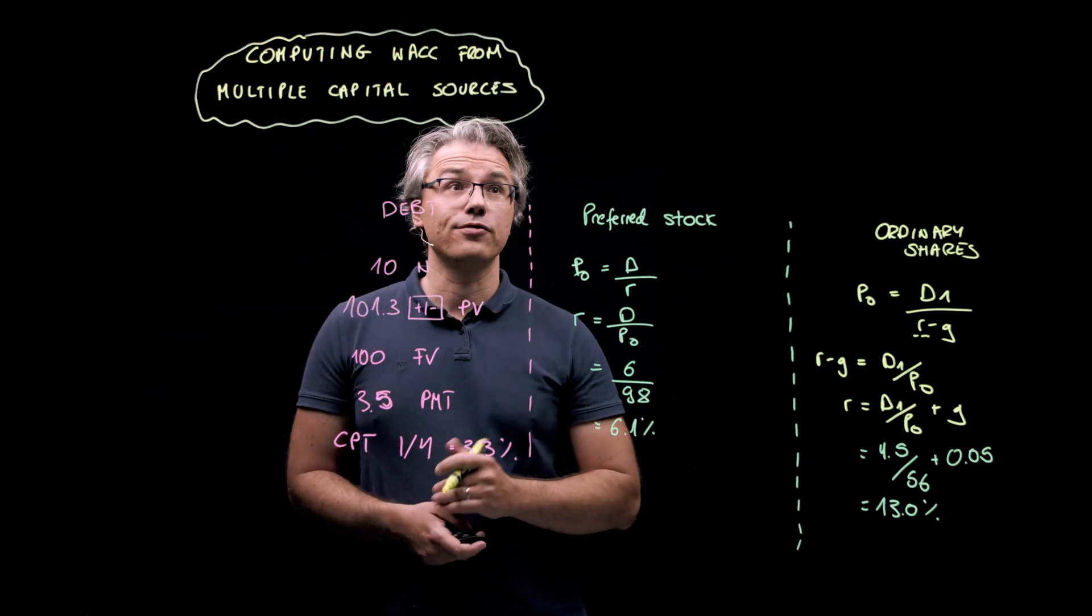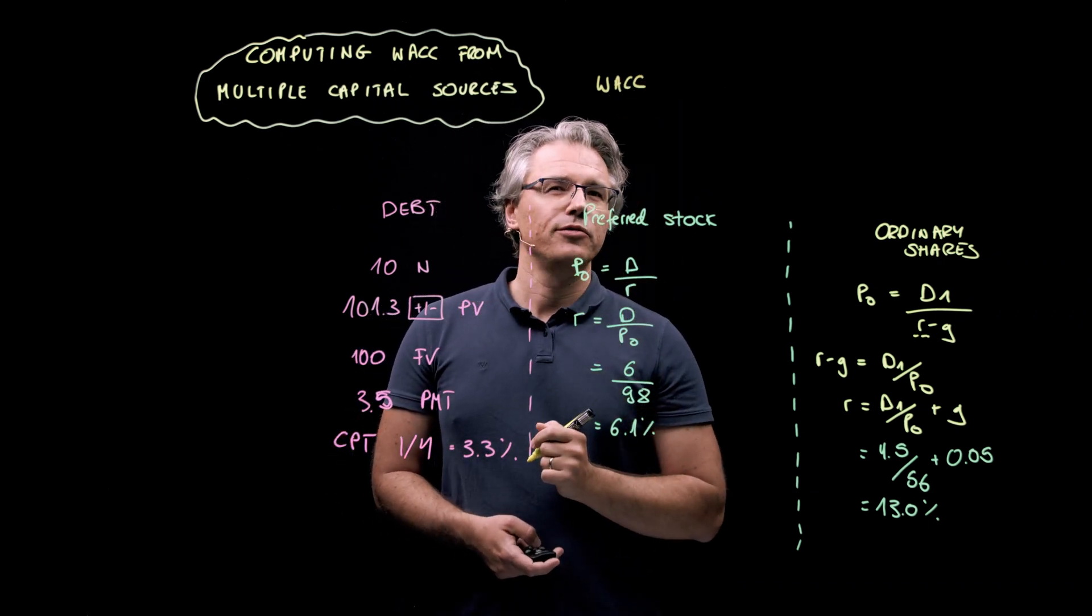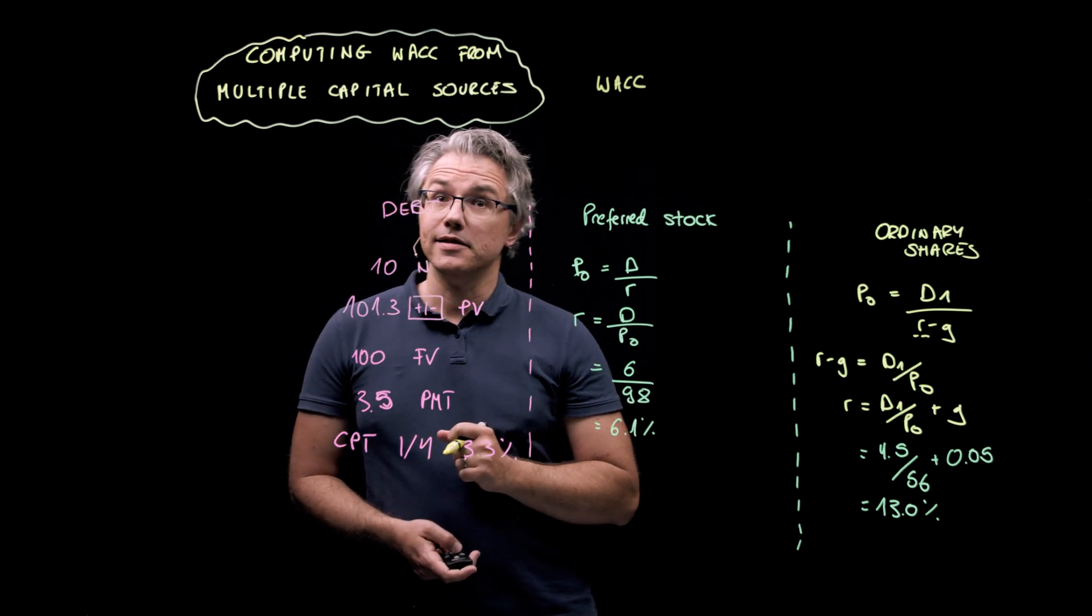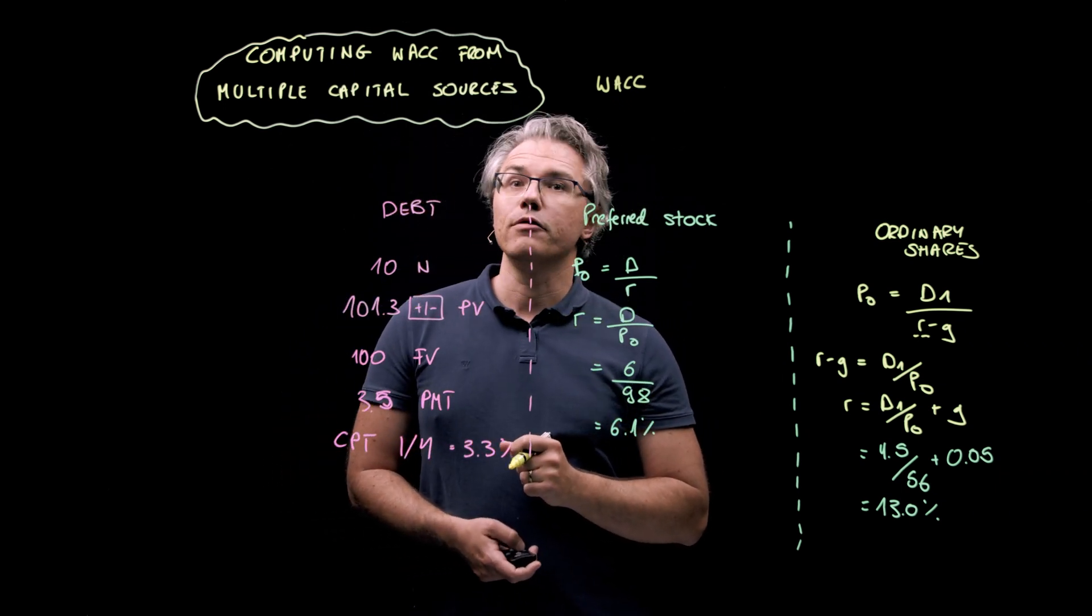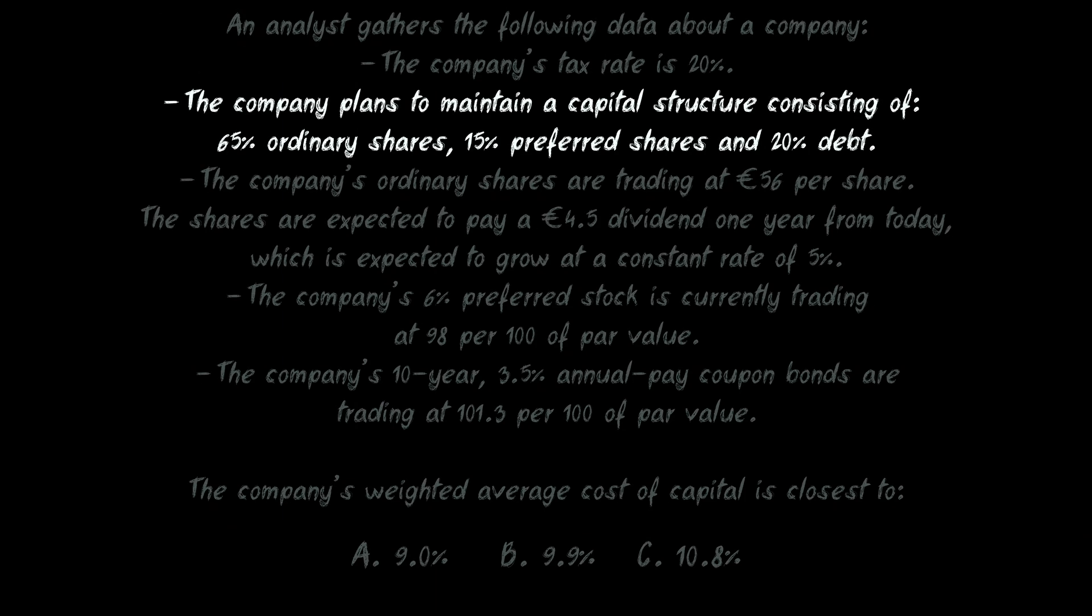Okay, on to the actual weighted average cost of capital computation. Here we will need to use the proper weights. And let's go back to the scenario one more time to find these. The company plans to maintain a capital structure consisting of 65% ordinary shares, 15% preferred shares and 20% debt. We will also, in just a moment, need the company's marginal tax rate, which is given as 20%.